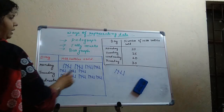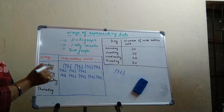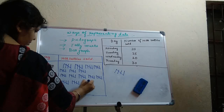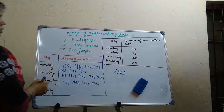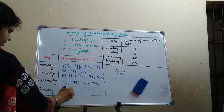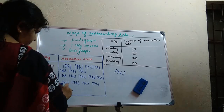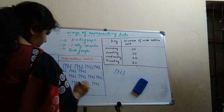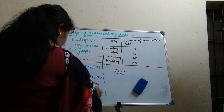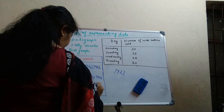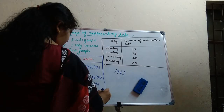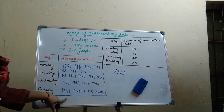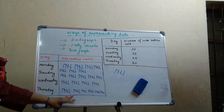Now we move to Wednesday. Wednesday is showing 20. So groups of 5 for 20 — 5, 10, 15, and 20. Next is Thursday, it is 30. So 6 groups of 5: 1, 2, 3, 4, 5, and 6 — so this is the total 30 milk bottles represented here. This is how we are representing the numbers in tally marks.